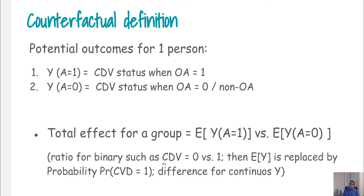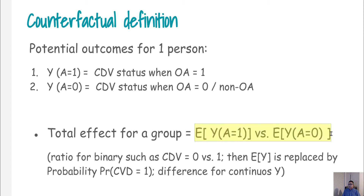In this scenario, we define the potential outcome as Y(a=1), meaning the cardiovascular event when osteoarthritis status equals one, and Y(a=0) as the cardiovascular status when osteoarthritis status is zero. The total effect is the difference between outcomes under two different exposure groups — for continuous outcomes we compare means, and for binary outcomes we compare probabilities.